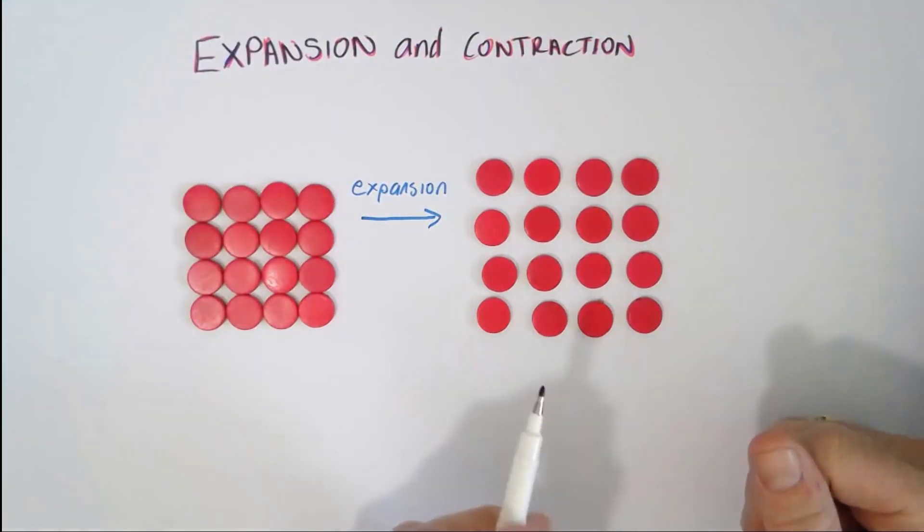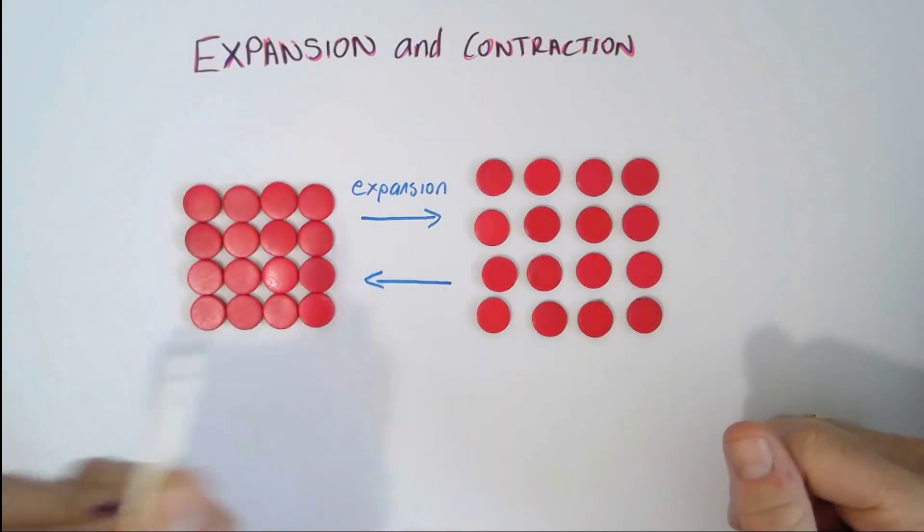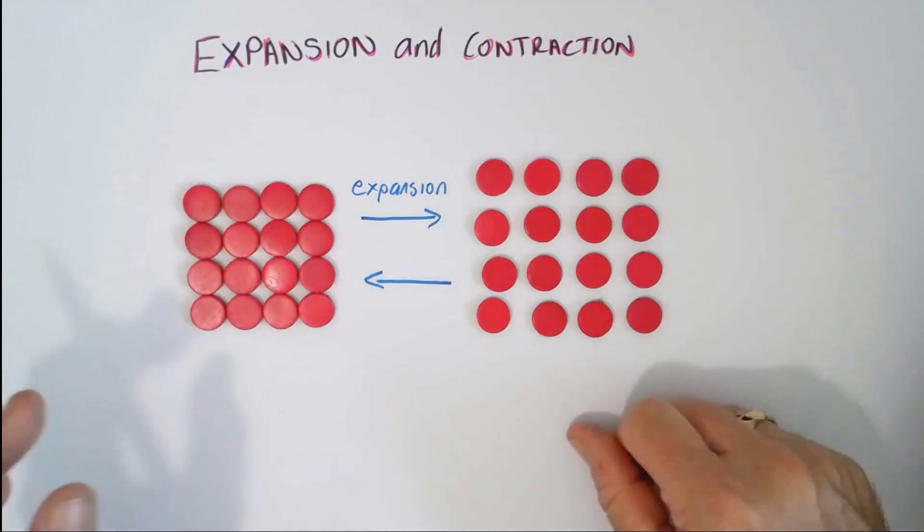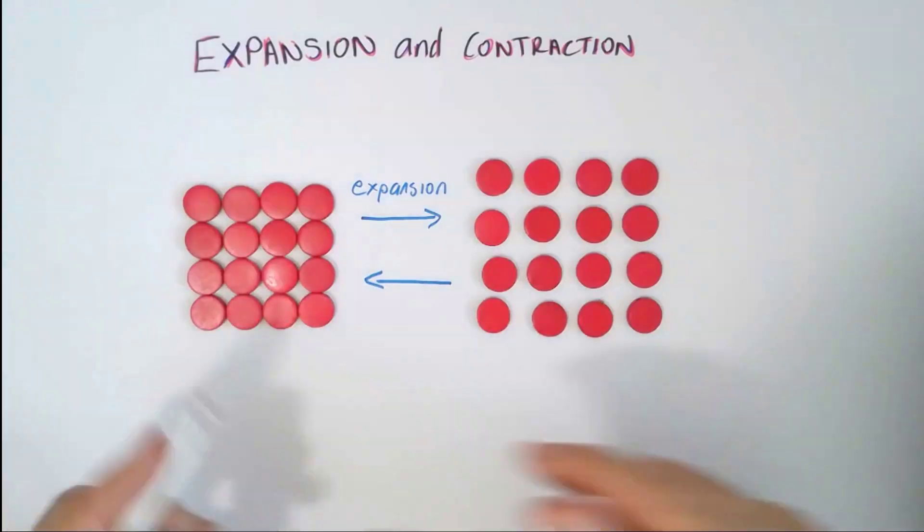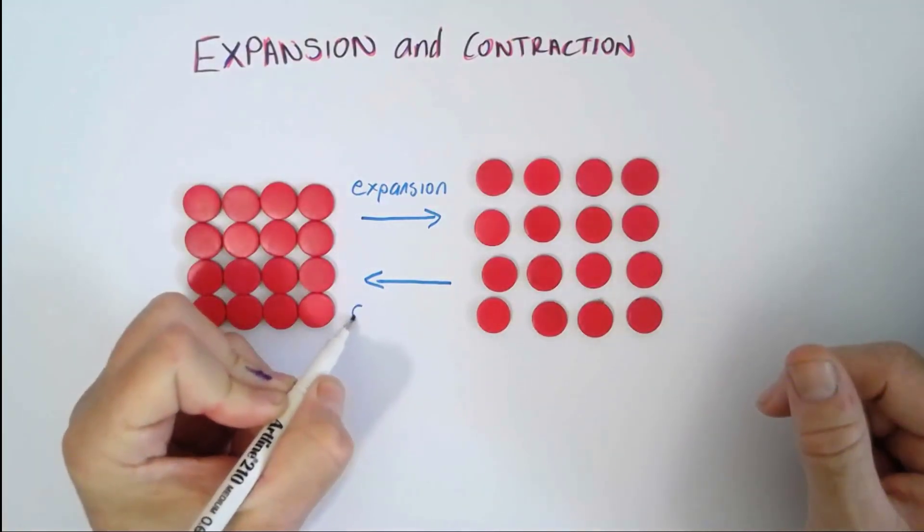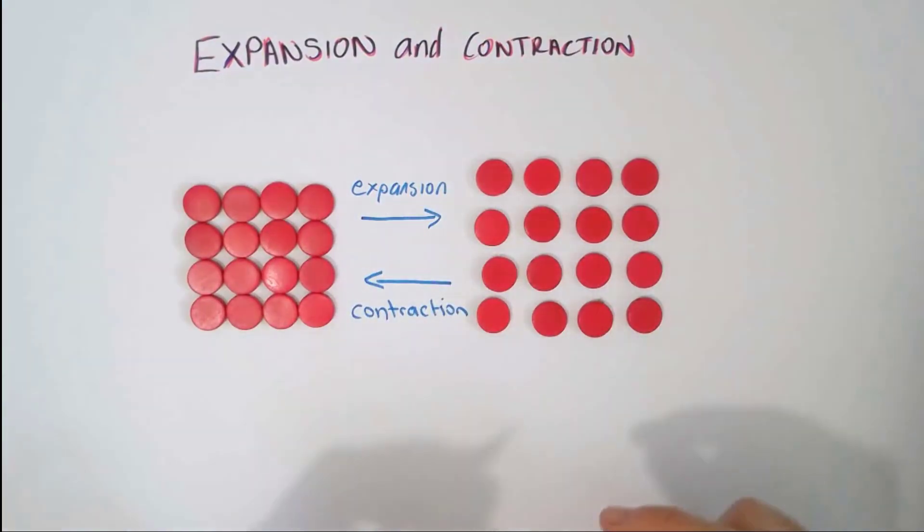And when the substance is cooled down and the temperature decreases, the particles aren't moving as fast and they move closer to each other, and it takes up less room. That's called contraction. So, expansion is taking up more room. Contraction is taking up less room.